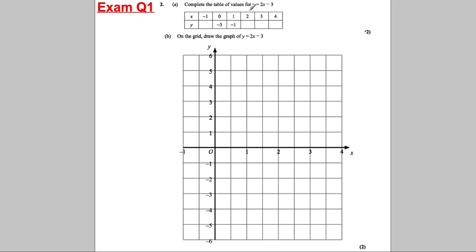OK. I always said put in the positive numbers first. 2 × 2 = 4, take away 3 is 1. 2 × 3 = 6, take away 3 is 3. 2 × 4 = 8, take away 3 is 5. You can see everything's going up in 2s, so it goes down in 2s — that would be down 2 to negative 5.